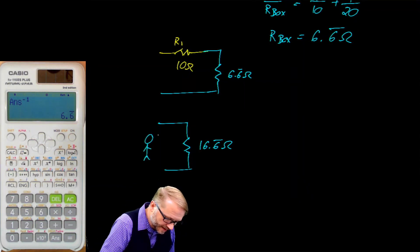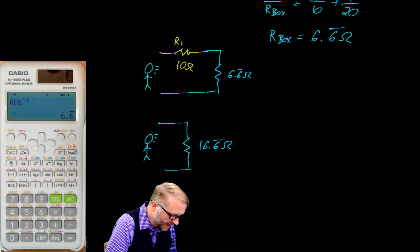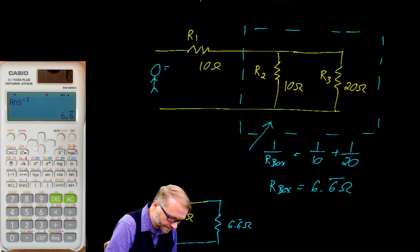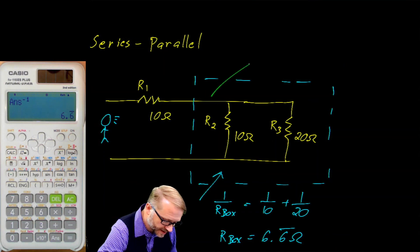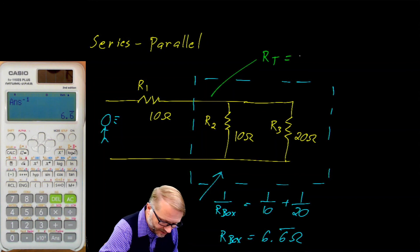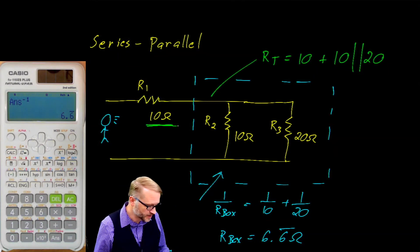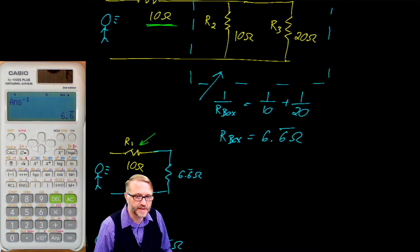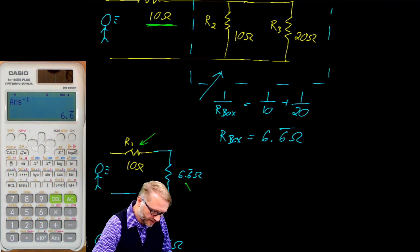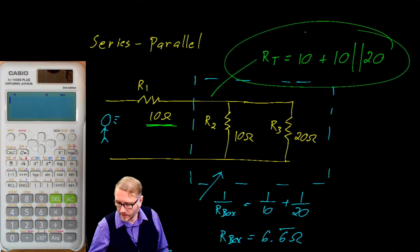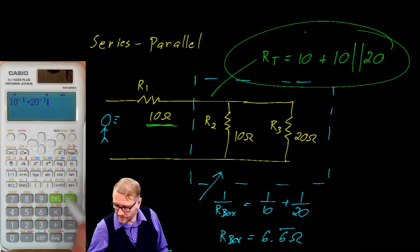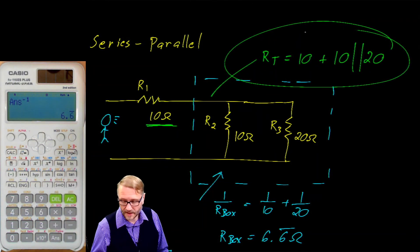As an observer looking in, you cannot tell the difference between any of these equivalent circuits — they all look the same. There's a shortcut: R total equals 10 plus (10 in parallel with 20). R1 is in series with the parallel combination of R2 and R3. On the calculator: 10 inverse plus 20 inverse equals inverse equals plus 10 — and there we are, 16.6 ohms.